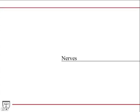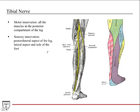The tibial nerve arises from the bifurcation of the sciatic nerve in the popliteal fossa. The sciatic nerve bifurcates into the common peroneal nerve, which gives rise to the deep and superficial peroneal nerves, and the tibial nerve, which descends through the posterior compartment. Motor innervation: all muscles in the posterior compartment of the leg — easy to remember by compartment.